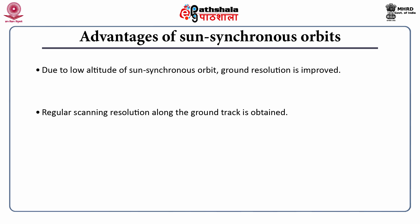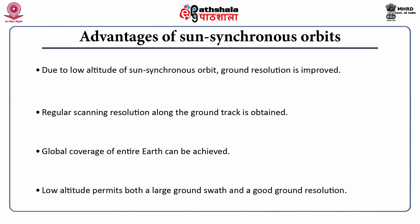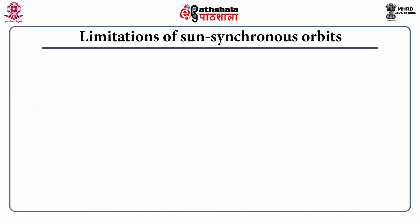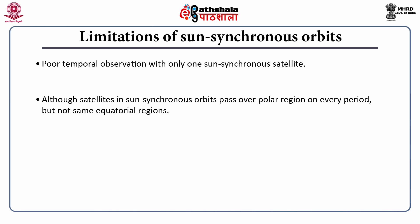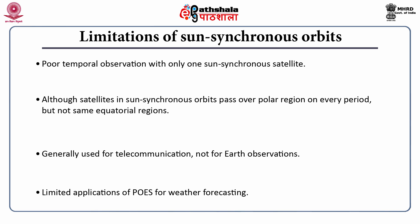Further advantages include global coverage of the entire Earth, and these low altitudes permit both a large ground swath and a good ground resolution. The limitations of sun synchronous orbits include poor temporal observation with only one sun synchronous satellite. Although satellites in sun synchronous orbits pass over the polar region on every period, they do not cover the same equatorial regions each time. The limited applications of POES can be done for weather forecasting.